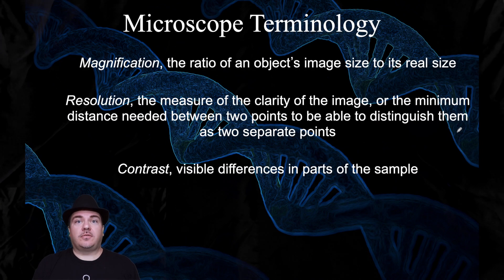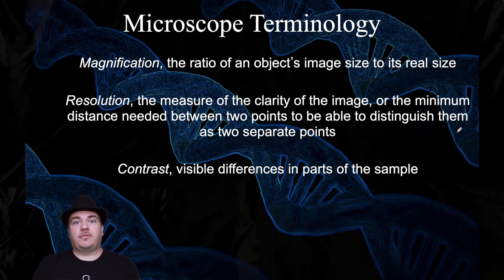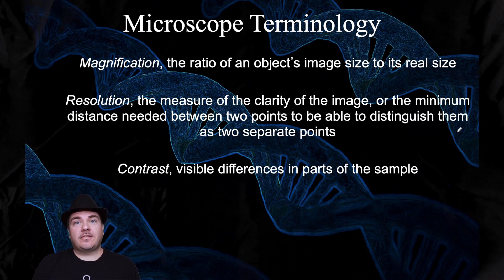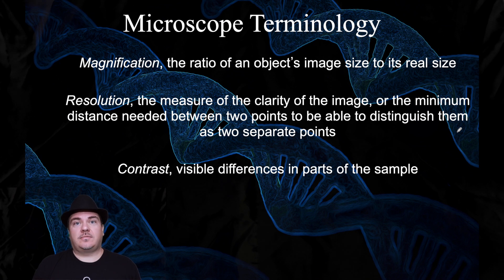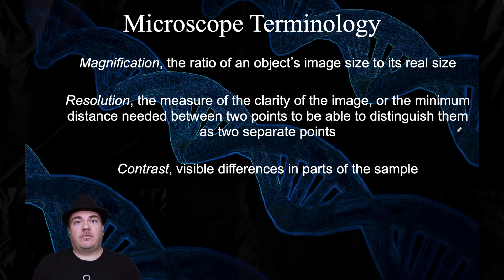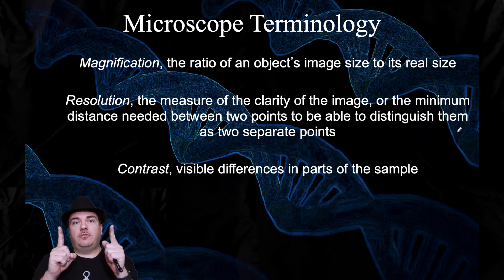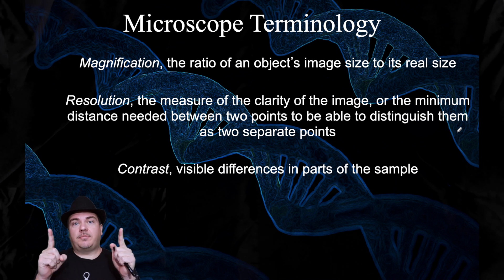If we're learning about microscopes, there are some terms that go along with them. The first and most obvious is magnification — an object's apparent size compared to its real size. In simpler terms, when you magnify something, you make it look bigger than it really is. The next term is resolution. One way of defining it is how crisp and clear the image is versus blurry. The more technical definition is that resolution is the minimum distance needed between two points to be able to distinguish them as two separate points.